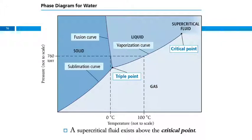So let's look at a phase diagram. This is the one for water. It's not to scale. Here we have pressure on the y-axis and temperature on the x-axis.